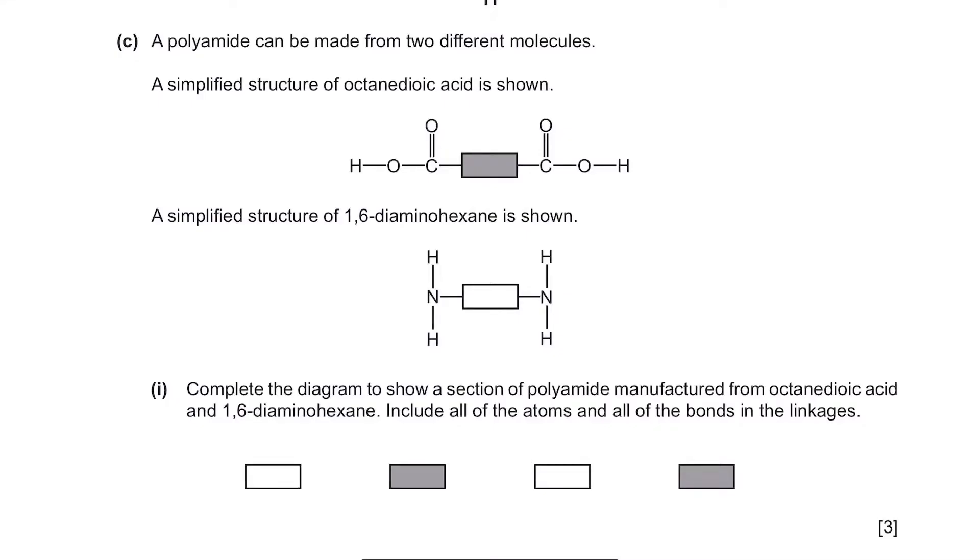Part C. A polyamide can be made from two different molecules. A simplified structure of octanedioic acid is shown. The one with the black box. A simplified structure of 1,6-diaminohexane is shown. The one with the white box. Complete the diagram to show a section of polyamide manufactured from octanedioic acid and 1,6-diaminohexane. Include all the atoms and all the bonds in the linkages. So from the octanedioic acid, we have COOH. And from the 1,6-diaminohexane, we have NH2. If we combine these two, we're going to form something called the amide bond. And it's going to look like CO and NH. So we just have to substitute this onto the diagram. So let me just draw it.